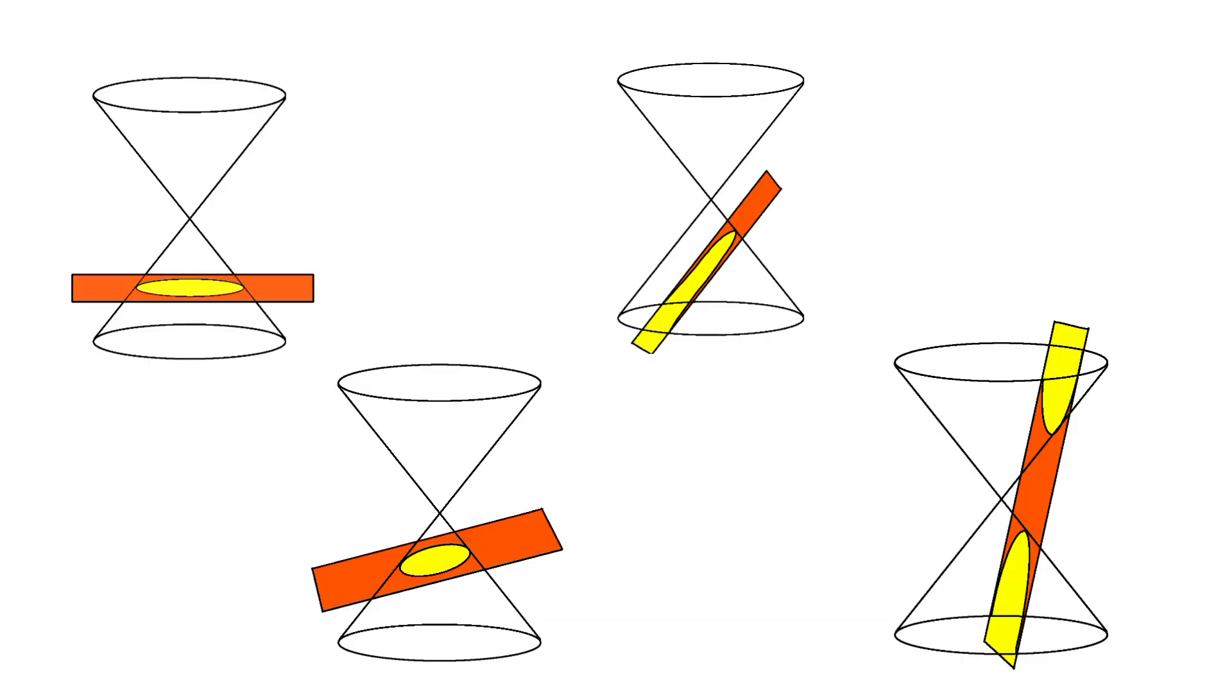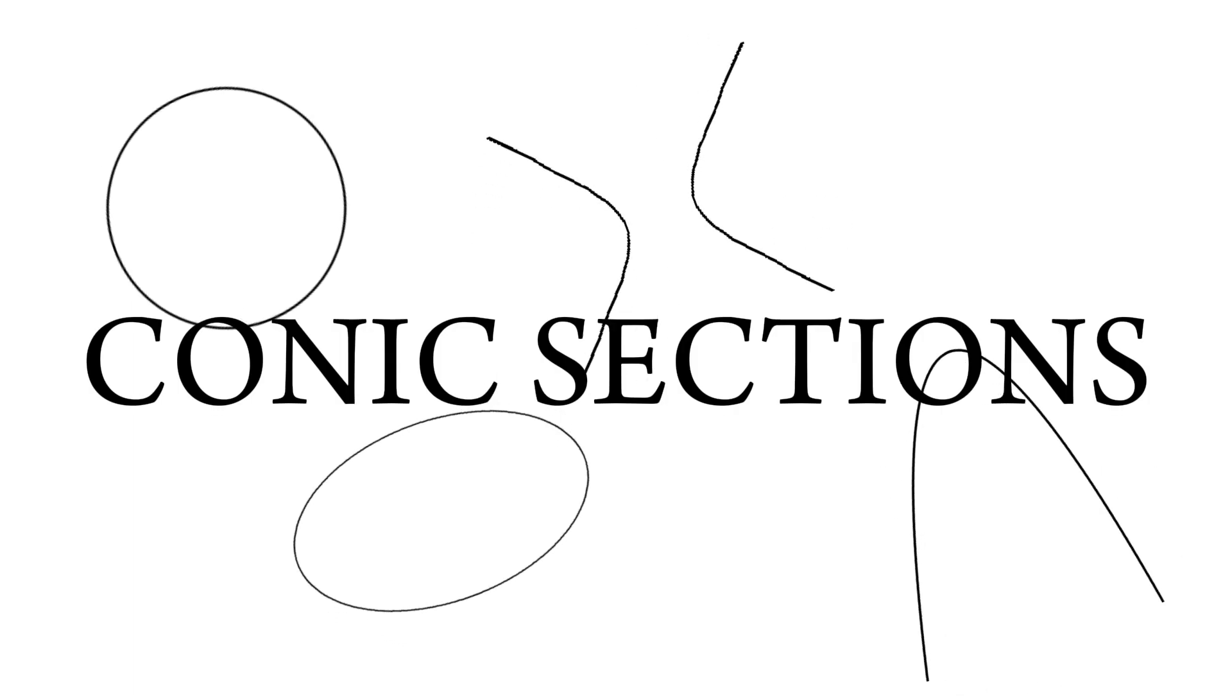Once a plane intersects these cones, we would create different two-dimensional curves. These curves are called conic sections.